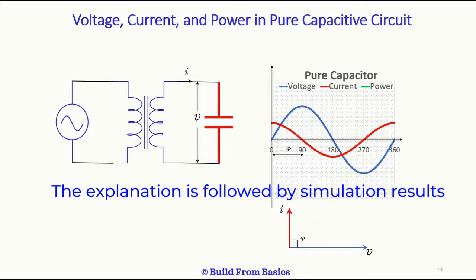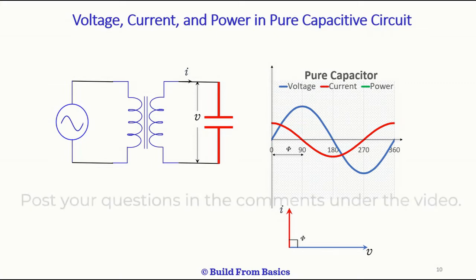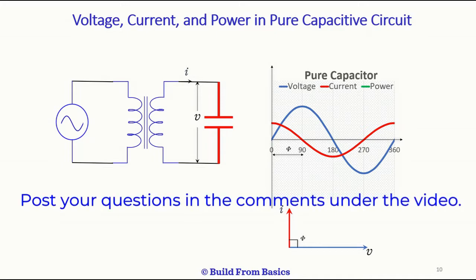The result is that in a pure capacitor circuit, the current always leads the voltage by 90 degrees. If the capacitor is not pure, then the angle is a little less, but in a pure capacitive circuit the angle is always 90 degrees. Now let's look at the instantaneous power.